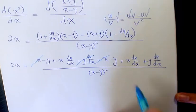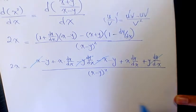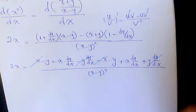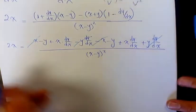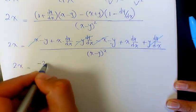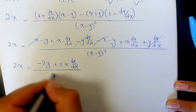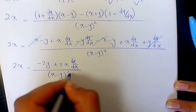Here we have negative y dy over dx, we have positive y dy over dx. Then we can say 2x equals to negative 2y plus 2x dy over dx over x minus y to the power of 2.